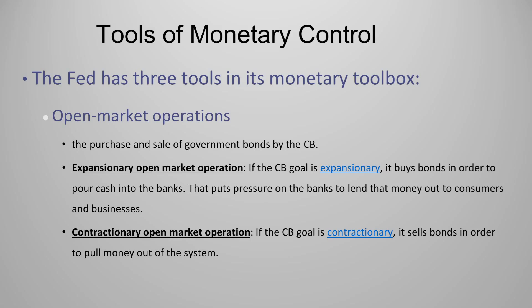In the expansionary open market operation, if the central bank's goal is expansionary, it buys bonds in order to pour cash into the banks. That puts pressure on the banks to lend that money out to consumers and businesses, which will then increase the money supply. The central bank purchases government bonds from the public or from the commercial banks, and in return gives money to the commercial banks. Once the commercial banks get the money, they use it to give loans to the public, and the process of giving loans increases the money supply in the economy.